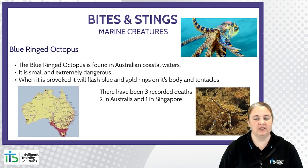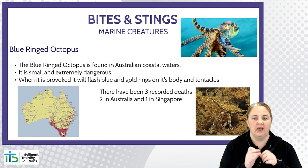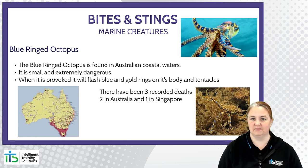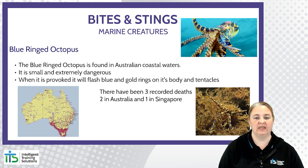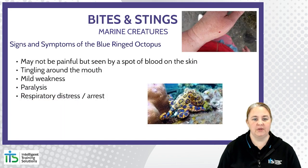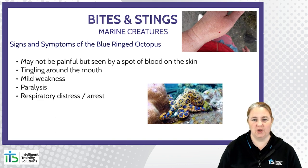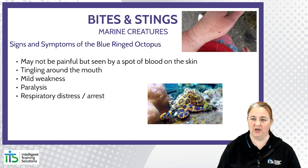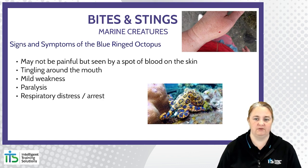The blue-ringed octopus is a marine creature treated with the pressure immobilisation technique. Found in Australia's coastal waters, it is extremely dangerous but very small. It is a sandy brown colour until upset, when it flashes blue and yellow rings. There have been three recorded deaths — two in Australia and one in Singapore — in the last century. The bite may not be painful as the octopus uses an anaesthetic, making it hard to detect until the casualty starts showing other symptoms such as tingling around the mouth, mild weakness, paralysis, respiratory distress and respiratory arrest.